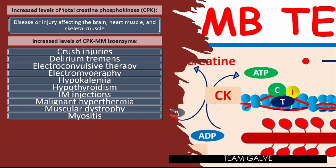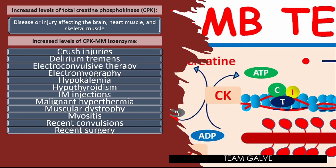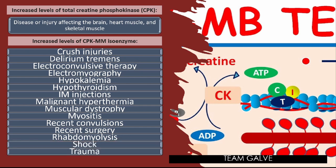Additional conditions associated with increased CPK-MM include: myocytis, recent convulsions, recent surgery, rhabdomyolysis — there's a medical surgical nursing lecture on rhabdomyolysis in the playlist — shock, and trauma. These are the diseases or disorders your patient is probably having whenever CPK and CPK-MM levels are increased. The normal value of CPK-MM is 100%.